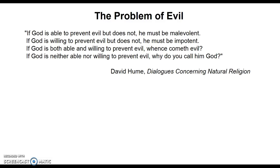David Hume, one of the earliest atheist intellectuals who argued against the existence of God, used a fourfold statement: If God is able to prevent evil but does not, he must be malevolent. If God is willing to prevent evil but cannot, he must be impotent. If God is both able and willing to prevent evil, then why does evil exist? If God is neither able nor willing, then why call him God?